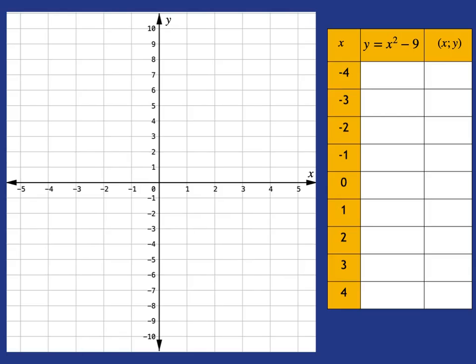We've got x being negative 4, negative 3, negative 2, negative 1, all the way up to 4. And we're going to work out the corresponding y values when y is calculated by saying x squared subtract 9.